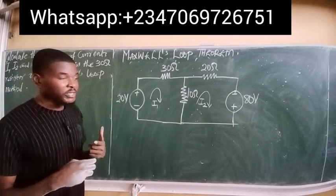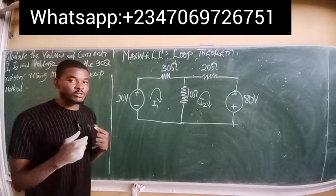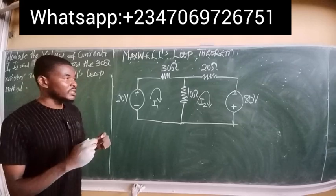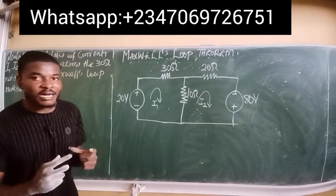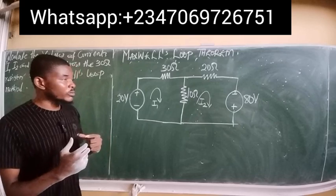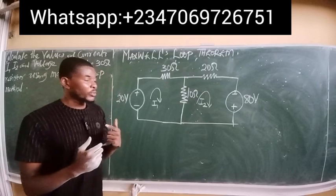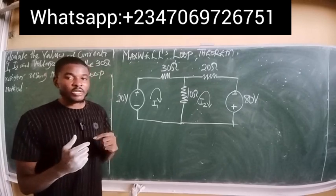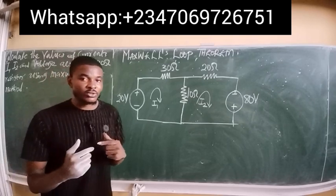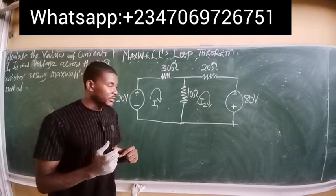Just like I explained in the previous video, Maxwell's loop method applies Kirchhoff's voltage law to electrical analysis. The law simply says the sum of all voltages at a particular loop is always equal to zero, considering potential drops when current flows through a resistor, a potential gain when current flows from negative to positive terminal, and a potential loss when current flows from positive to negative terminal.